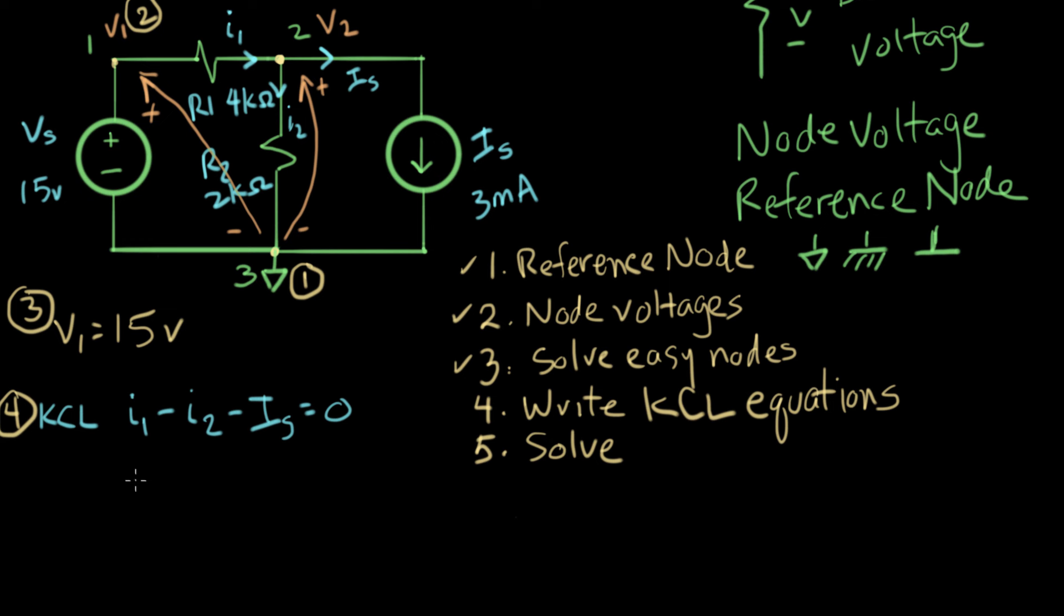This is where we do something new that we haven't done before. We're going to write these currents in terms of the node voltages. So we could write I1. I1 is the current flowing this way through this resistor. I1 equals V1 minus V2 over R1. That's the current flowing in resistor R1 in terms of node voltages. The current flowing down through I2. Now we have to subtract I2. So we just apply Ohm's law directly, which means that the current in I2 is equal to V2 divided by R2.